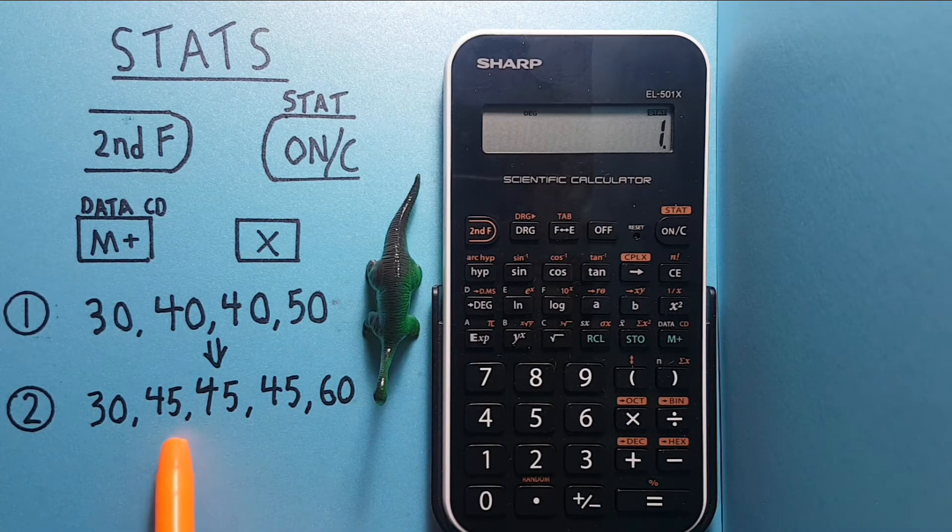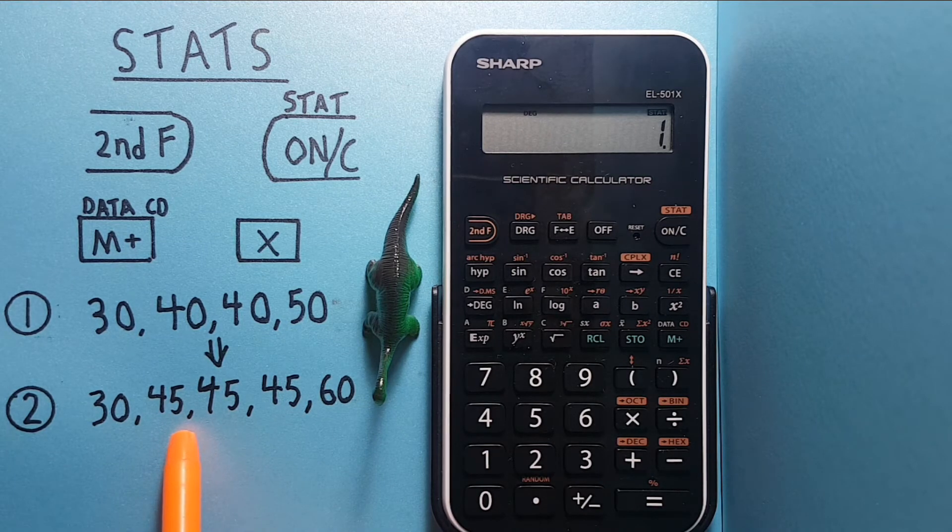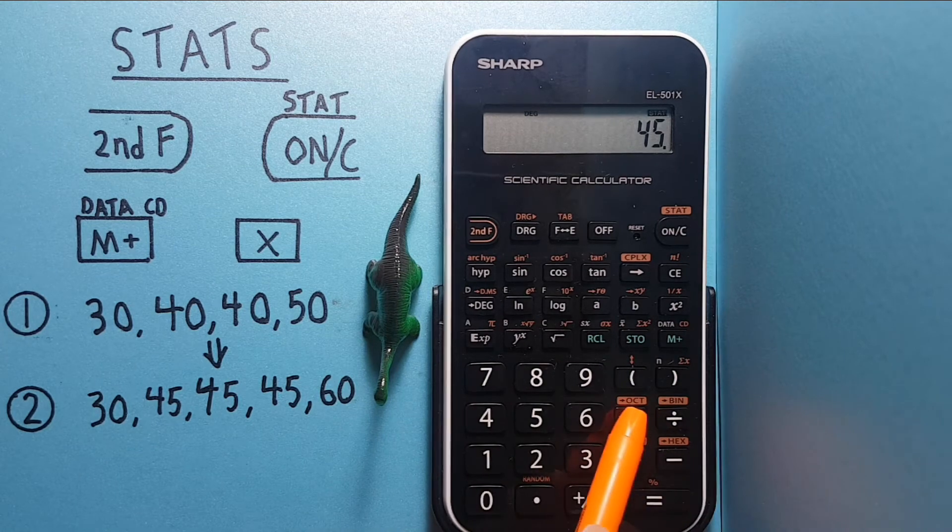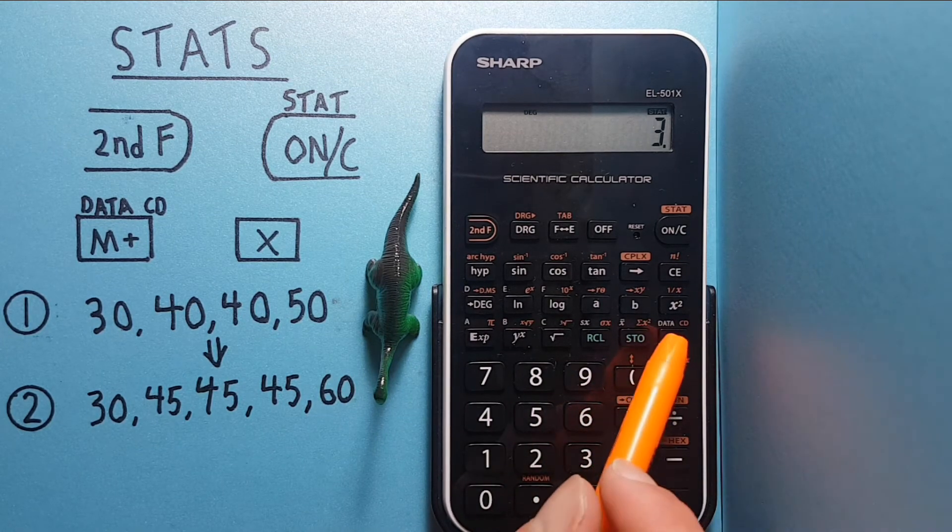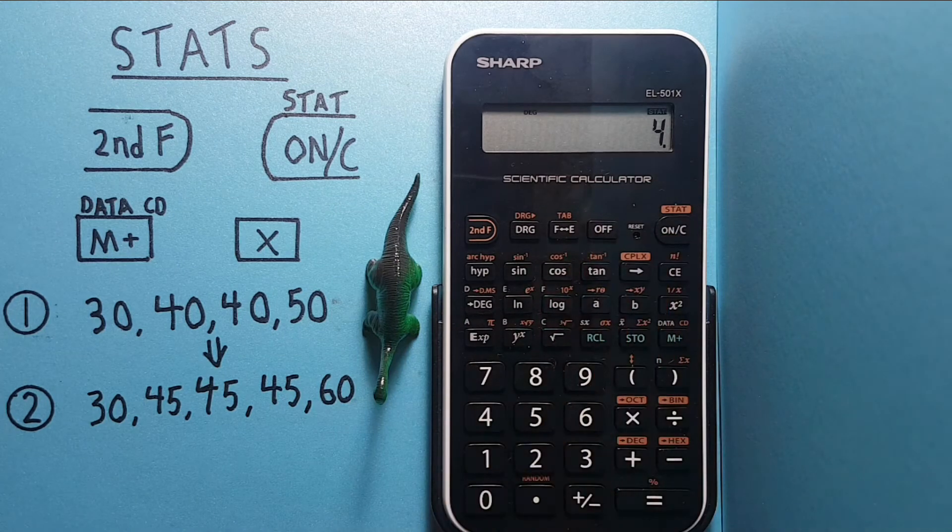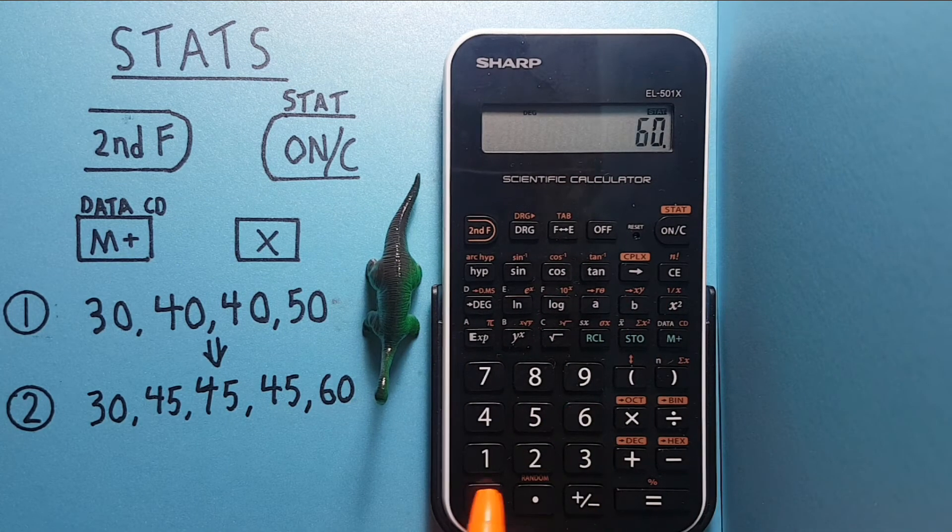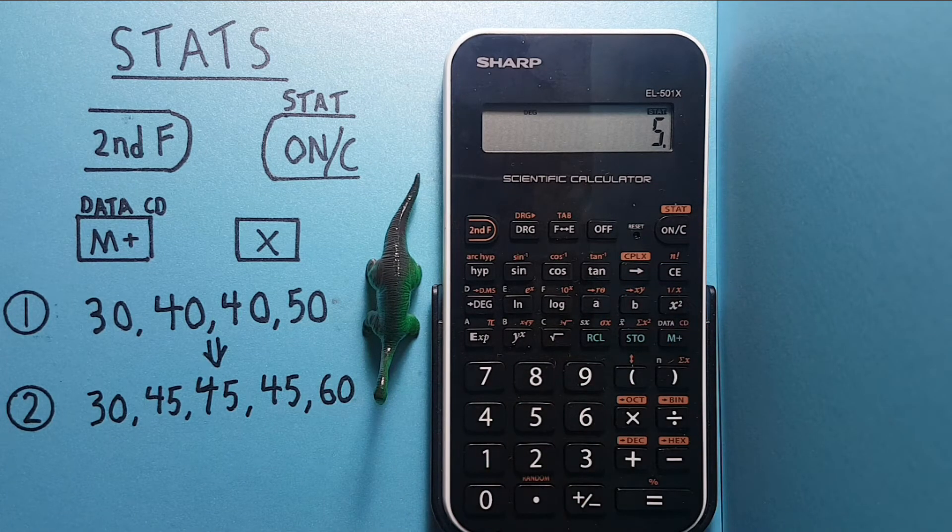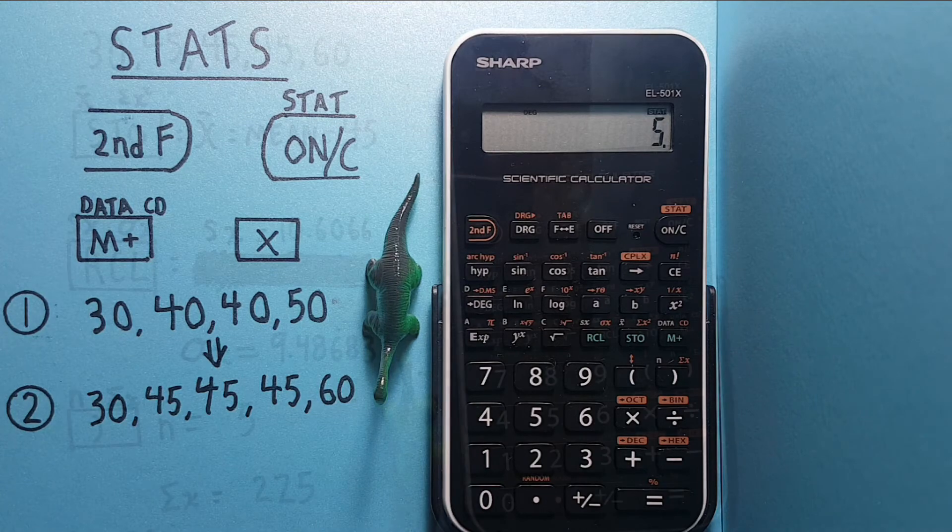And then let's enter the rest of the correct data set. So that's three 45s. And see we now have four numbers in our data set. And 60. We now have five numbers and the correct data set in our calculator. Let's move on to doing some of the calculations.